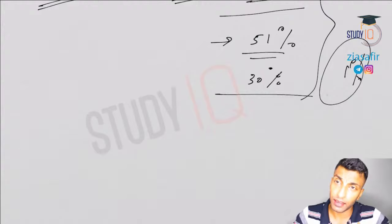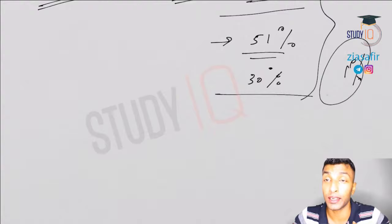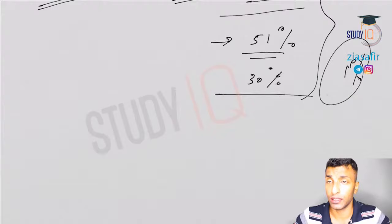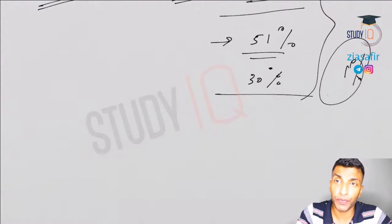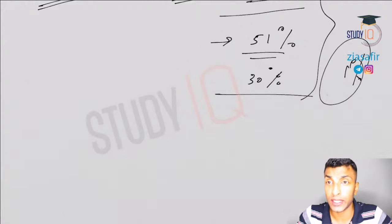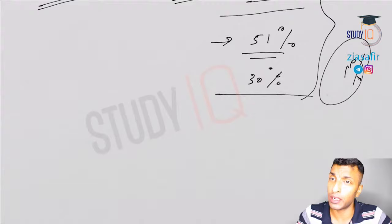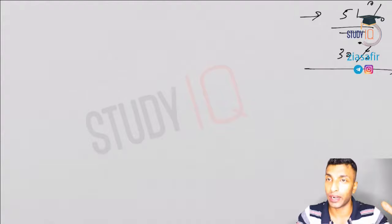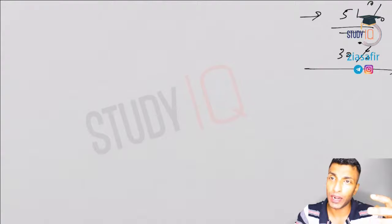One more provision of the 1813 Charter Act was that the company was directed to spend one lakh rupees for the betterment of education in areas under their control — a first step towards education. After this, more radical steps follow: 1835 Macaulay's Minute, based on the trickle-down or downward filtration theory; 1837, Persian was replaced with English as the official language; 1854 Wood's Dispatch, known as the Magna Carta of modern Indian education; and 1882 Hunter Commission. These are all milestones in education — without mentioning them, especially in essay-type questions, your answer is not complete.